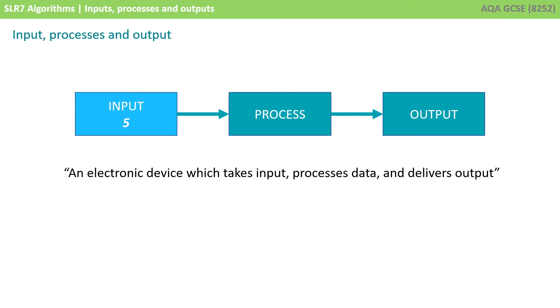You might remember this simple example. For example, a computer could take in the number 5, it could perform the calculation multiply by 2, and supply the output 10.